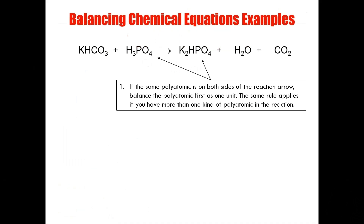However, that's only the case if the other polyatomic ion is on both sides of the reaction arrow. If you take a look at carbonate, carbonate is only on one side of the reaction arrow — it does not exist in the product side. Although carbon dioxide looks like carbonate, it is not carbonate, so I cannot treat it as a single unit. Looking at my phosphate ions, I have one phosphate ion on the reactant side and one phosphate ion on the product side — so the phosphate ions are already balanced, and there's nothing left to do but move on to rule number two.